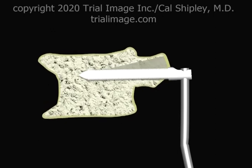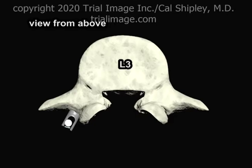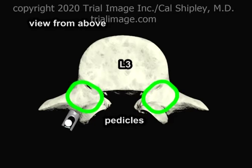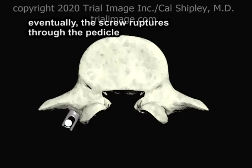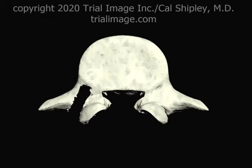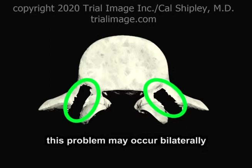If this process continues unchecked, the screws may rupture through the pedicle. Viewing the vertebrae from above gives us a better view as the screw ruptures through the pedicle. Once rupture has occurred, the pedicle cannot be used for re-repair. Needless to say, this process may occur bilaterally.